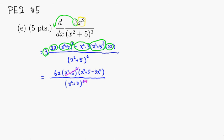Then we can just clean it up a little bit, so you have 6x times, and you have a 5 minus. So x squared minus 3x squared, so it's a 2x squared.